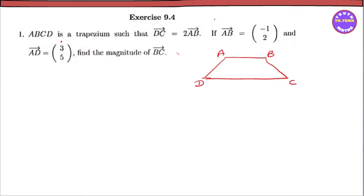ABCD is a trapezium. We have points A, B, C, D. We are given vectors, including the AB vector and DC vector.